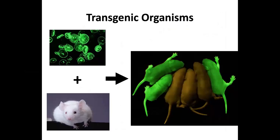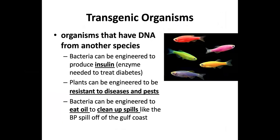So what exactly are transgenic organisms? They are organisms that have DNA from another species. Some examples: bacteria can be engineered to produce insulin, which is needed to treat diabetes. Plants can be engineered to be resistant to diseases and pests. And bacteria can be engineered to eat oil to clean up spills, just like the BP oil spill off of the Gulf Coast.